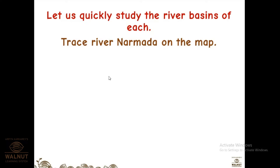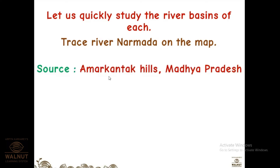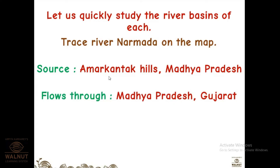After this we'll open the textbook, so keep the names of the rivers in your mind. River Narmada — the source is Amarkantak Hills in Madhya Pradesh. It originates from Amarkantak Hills and flows through Madhya Pradesh and Gujarat.